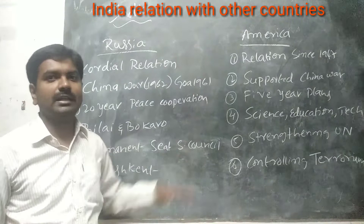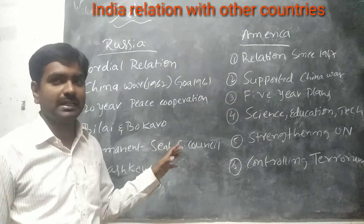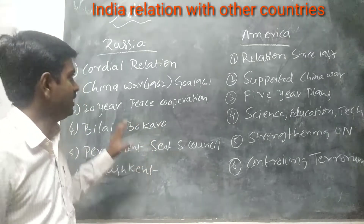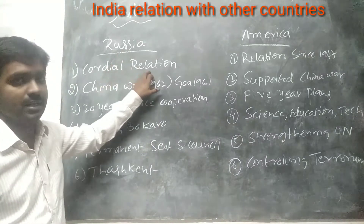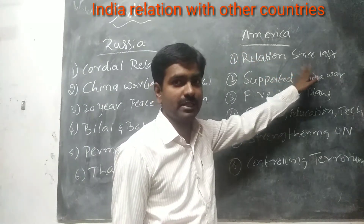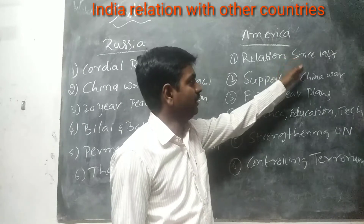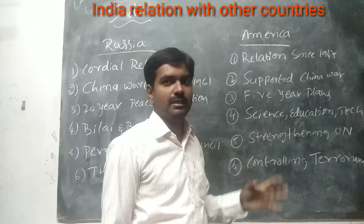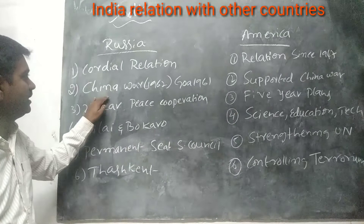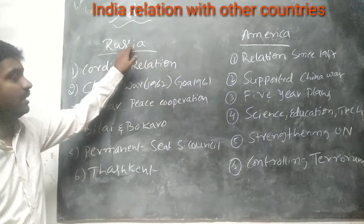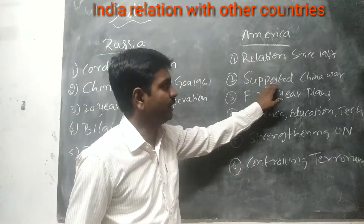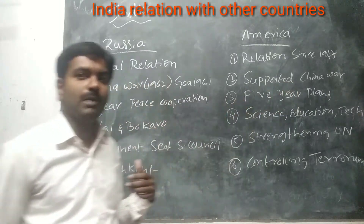India and Russia, and India and America: both are powerful countries in the world. India maintains equal distance and good relationships with both countries. We have had a cordial relationship with Russia since 1947. During the China war and the Goa liberation movement, Russia supported India completely. America also supported India at the time of the China war.